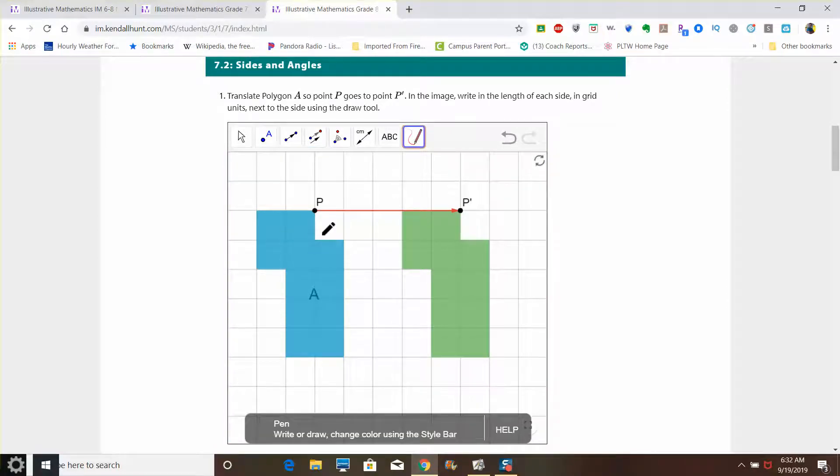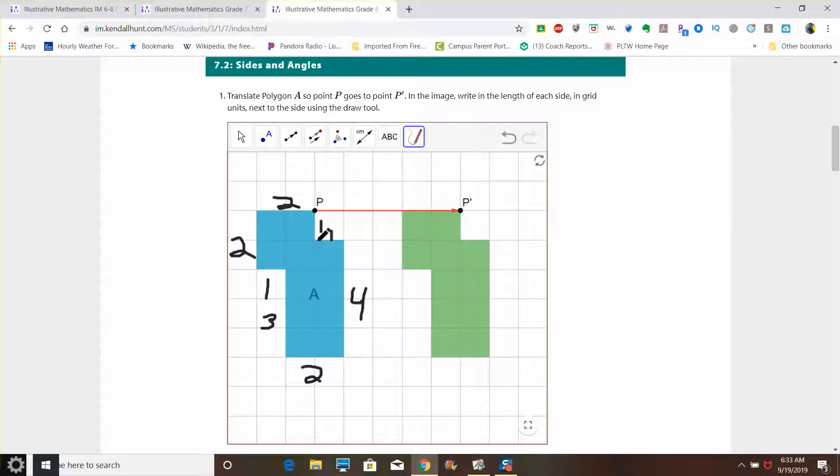Now, you may already kind of guess what's going on here, and I want to just show you what is going on between this pre-image and this image. So we have shape A, we have our shape A prime here on point P prime. So this length here is two, one, three, two, four, one, one, and two. So this particular shape has these sidelines right here.